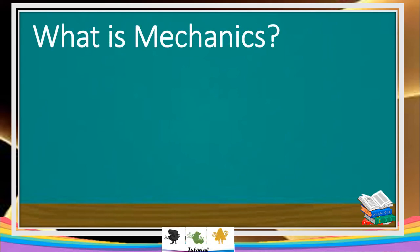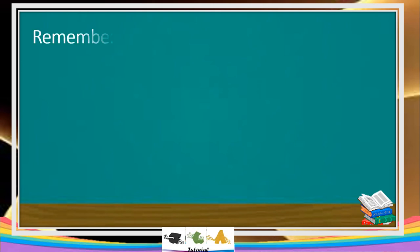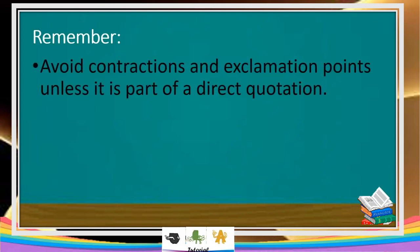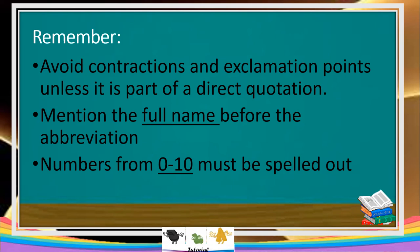Then let's proceed to mechanics. So earlier we discussed: organization, cohesion and coherence, and language use. Now we have mechanics. This is very important. It is a set of conventions on how to spell, abbreviate, punctuate, and capitalize. Always remember: avoid contractions and exclamation points unless they are part of a direct quotation. Mention the full name before the abbreviation. And numbers zero to ten must be spelled out — do not just write the numeral; you must spell it out.